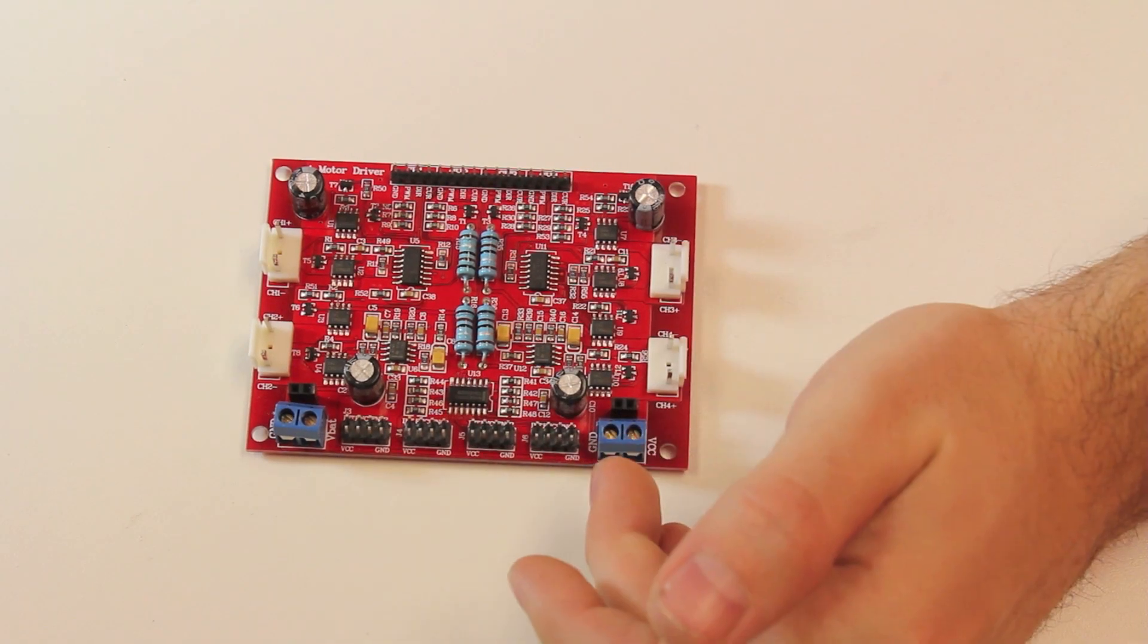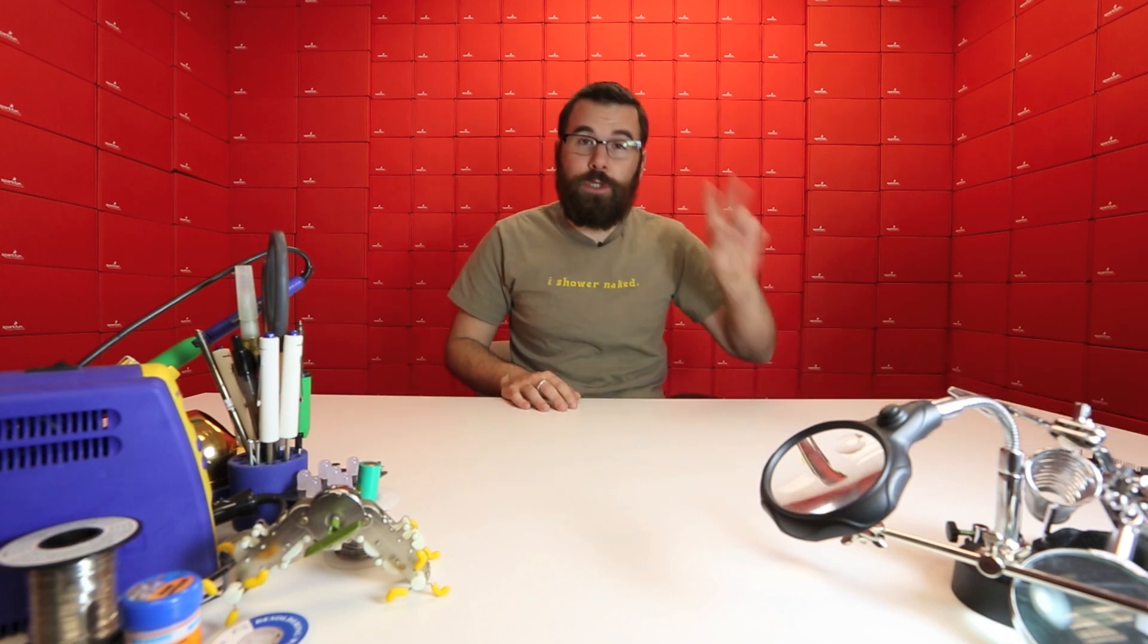The interesting thing about this controller is it actually kind of sums up the quadrature output. So you can actually get by with just using one interrupt for the quadrature optical encoders. With the Arduino, you only have the option of two interrupts for the Uno. This you can actually get it down to only using two for multiple instead of two per wheel.